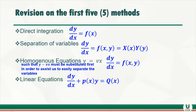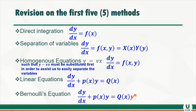The fourth method is linear. In the case of linear, our function f(x, y) equals Q(x) minus P(x) multiplied by y. The fifth category is called Bernoulli, which we are going to consider in this video. If you compare Bernoulli and linear, the only difference is that Q(x) is multiplied by y raised to power n.